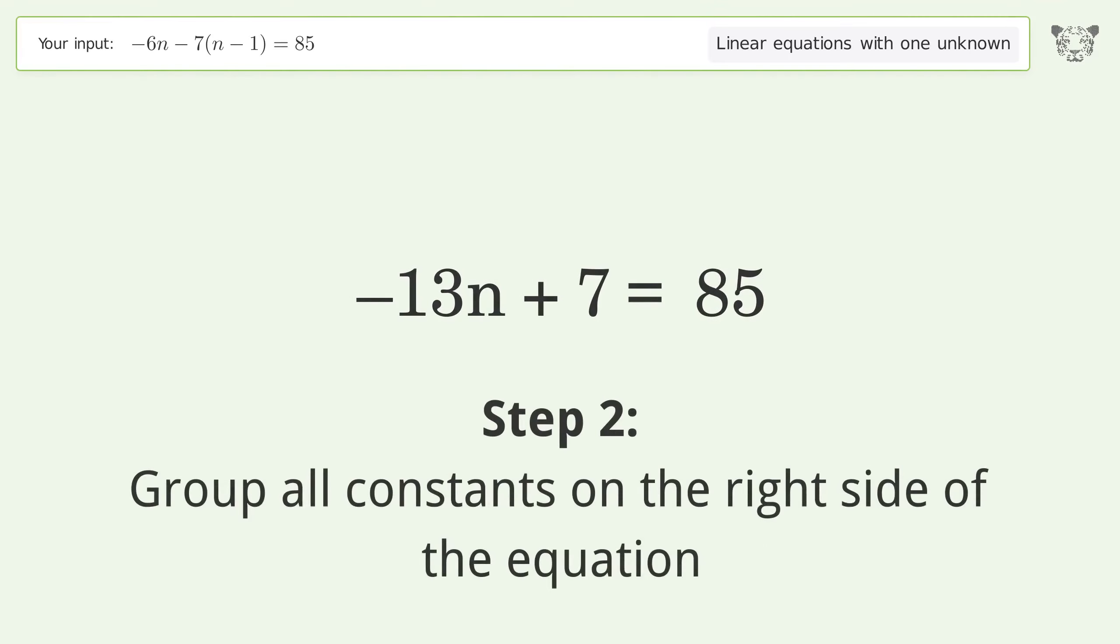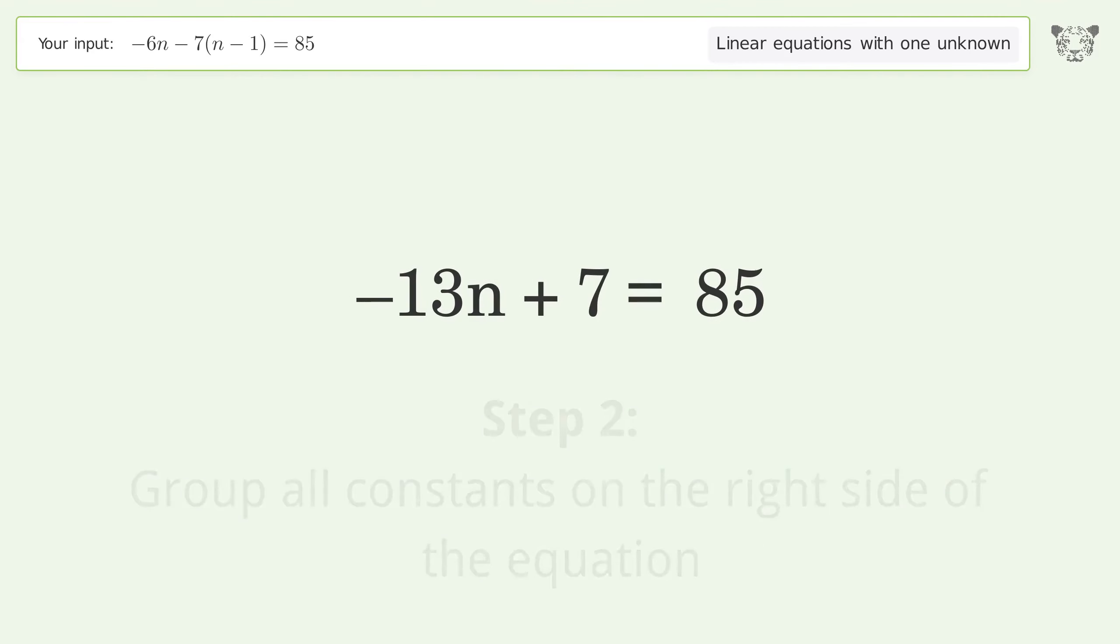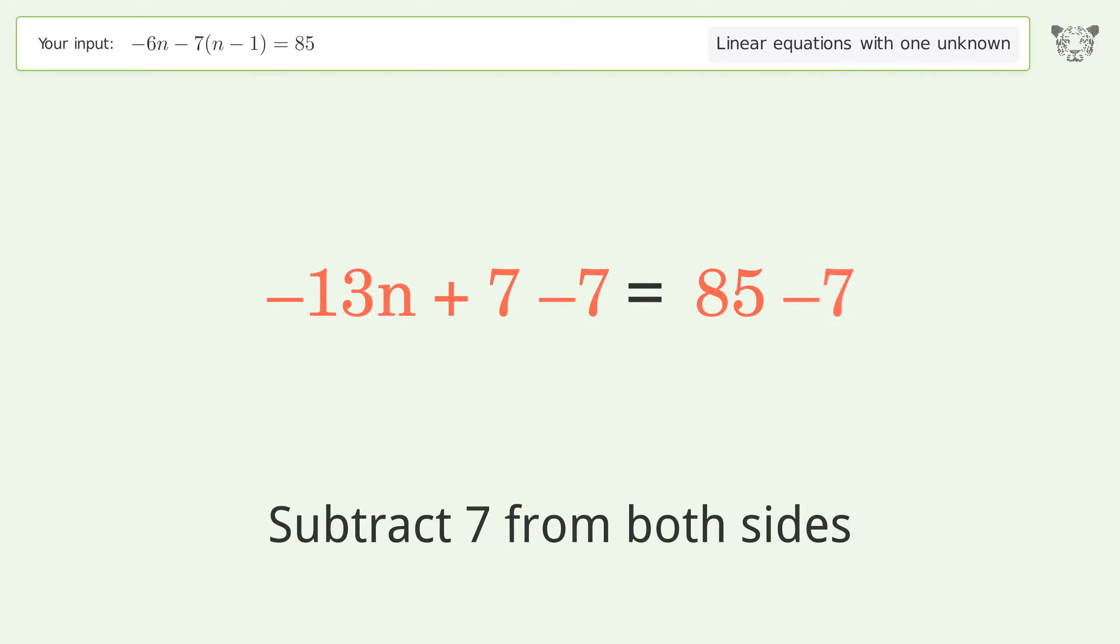Group all constants on the right side of the equation. Subtract seven from both sides. Simplify the arithmetic.